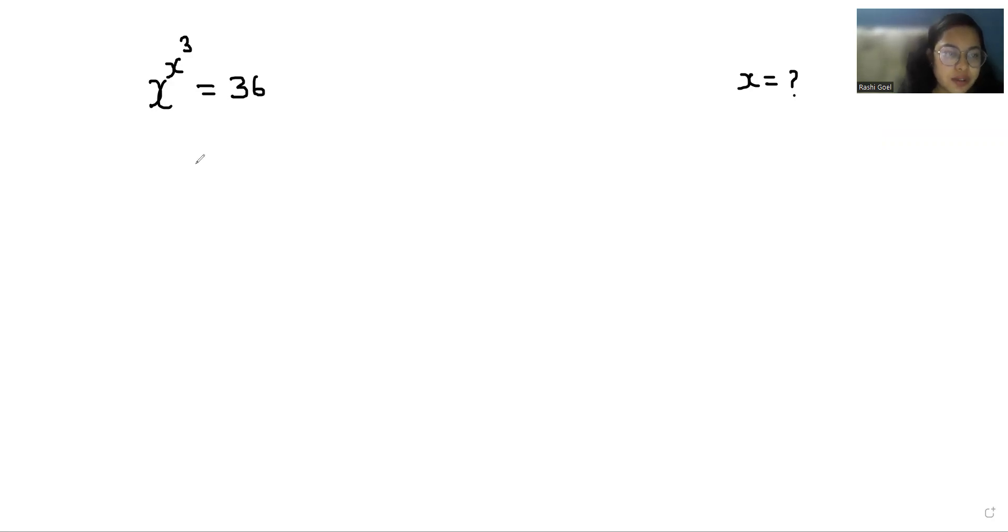So x^(x^3) = 36. We can write it as 6 squared.